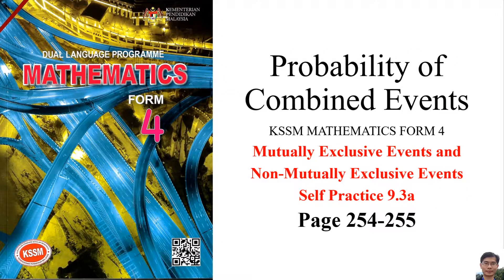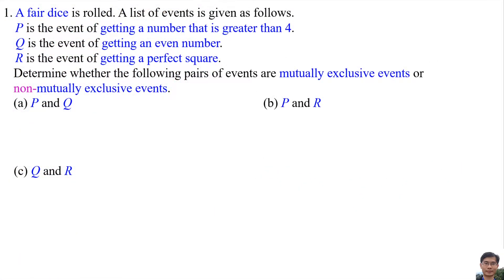Probability of Combined Events, KSSM Mathematics Form 4: Mutually Exclusive Events and Non-Mutually Exclusive Events, Self-Practice 9.3a, pages 254 to 255. Question No. 1: A fair die is rolled. A list of events is given as follows. P is the event of getting a number greater than 4. Q is the event of getting an even number. R is the event of getting a perfect square. Determine whether the following pairs of events are mutually exclusive or non-mutually exclusive events.